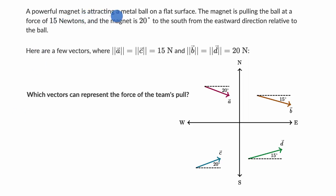We're told a powerful magnet is attracting a metal ball on a flat surface. The magnet is pulling the ball at a force of 15 newtons, and the magnet is 20 degrees to the south from the eastward direction relative to the ball.